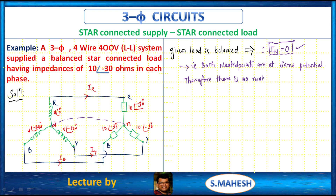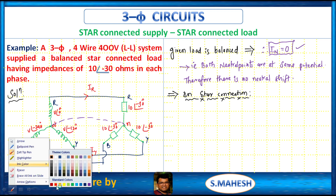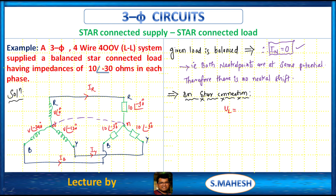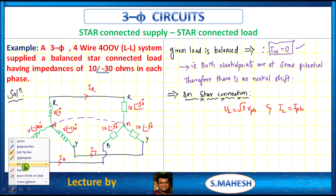Both neutral points are at the same potential, so there is no neutral shift. In star connection, we know the relations: VL equals root 3 times Vphase, and IL equals Iphase. We will now perform the complete analysis to find all quantities — line voltages, phase voltages, phase currents, and line currents.